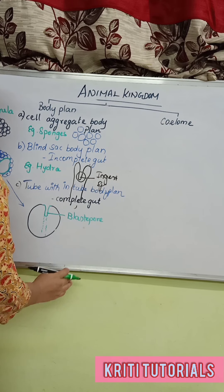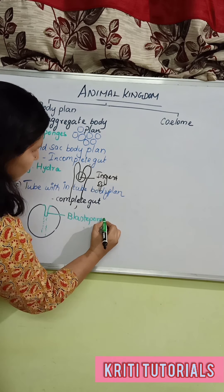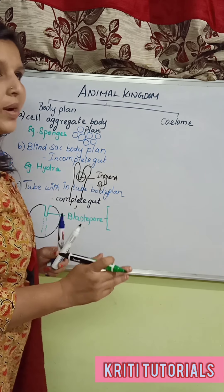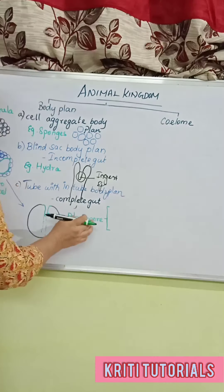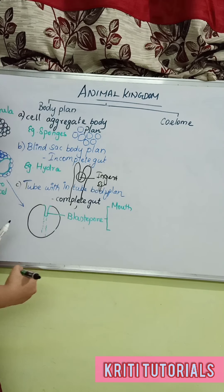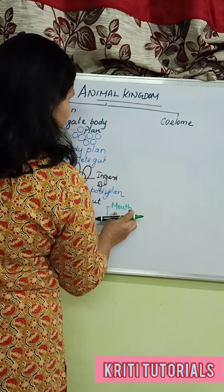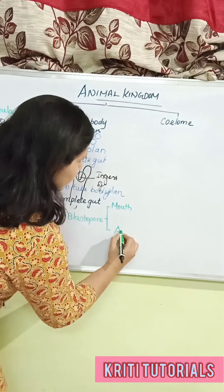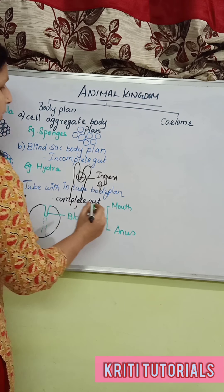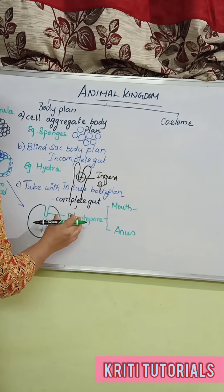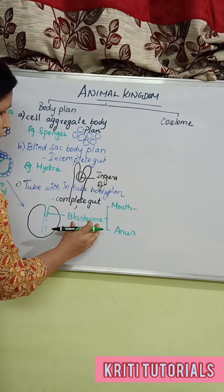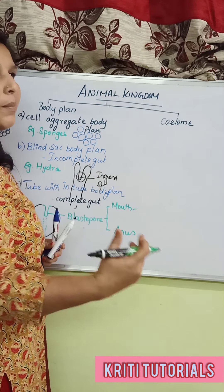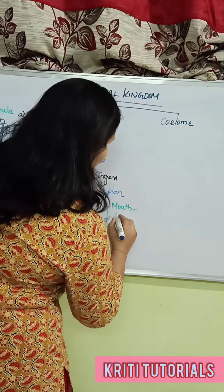The blastopore has two conditions. The first condition is that the blastopore first develops into the mouth. The species in which the blastopore gives rise to the mouth in the initial stage and the anus develops later are called protostomes.